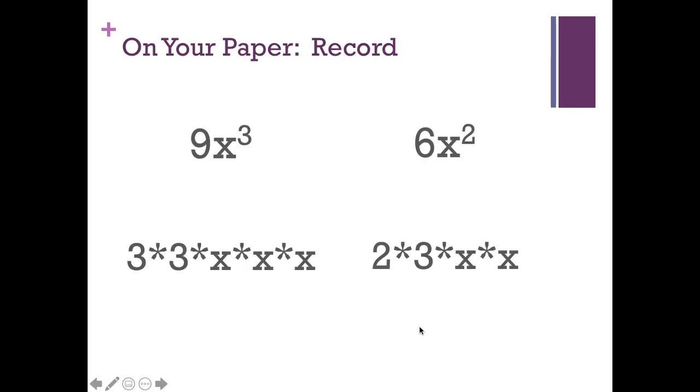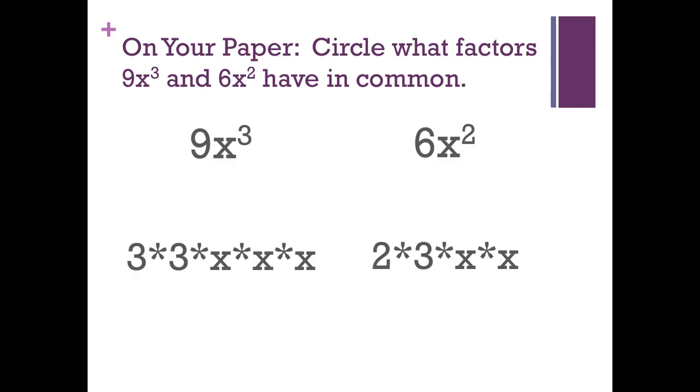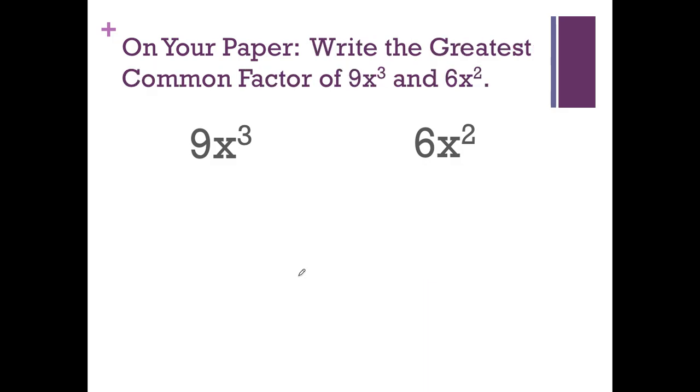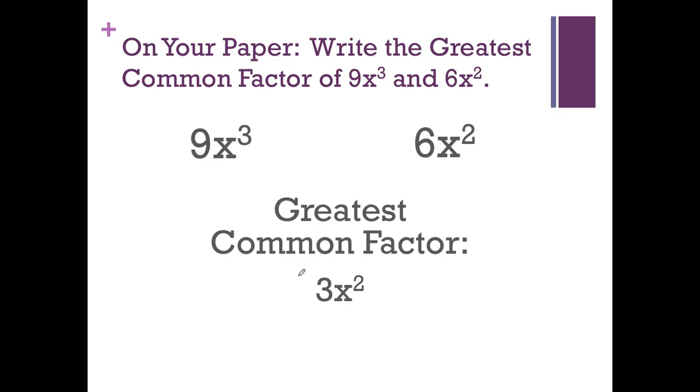So now on your paper, you want to write down these factors that you see. Then we're going to circle, in this case I'm going to underline, what factor these have in common. So I notice on this side they both have a 3, that's great. And then over here there's 2 x's, and I can do the 2 x's there. So that's what's in common: 1, 3, and then 2 of those x's. So that's the greatest common factor of 9x cubed and 6x squared. It's going to be 3x squared.